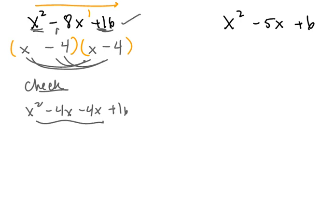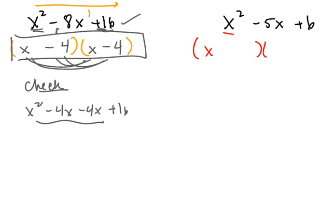Then I check it: that gives 2x squared plus 2x minus 2x minus 2. Notice those middle terms cancel, and I do not end up with what I started with. So something was wrong, and one thing I can try is changing the order. I'm going to use a different color to show it's a completely different attempt. This time it's 2 here and 1 here — just the order changed — and checking gives plus 4x minus x minus 2, which simplifies to positive 3x.